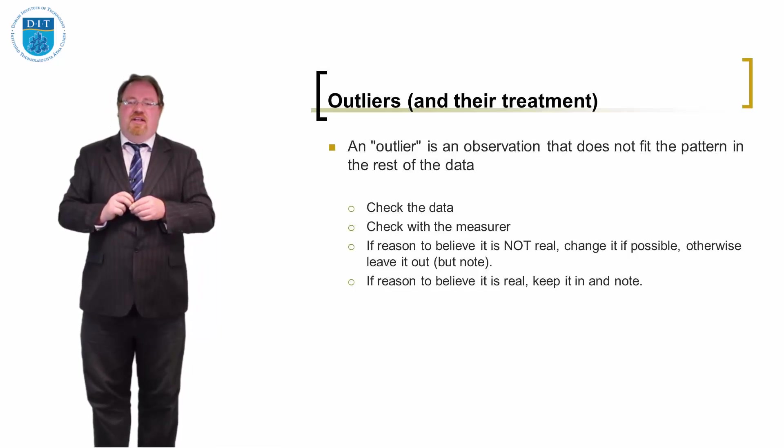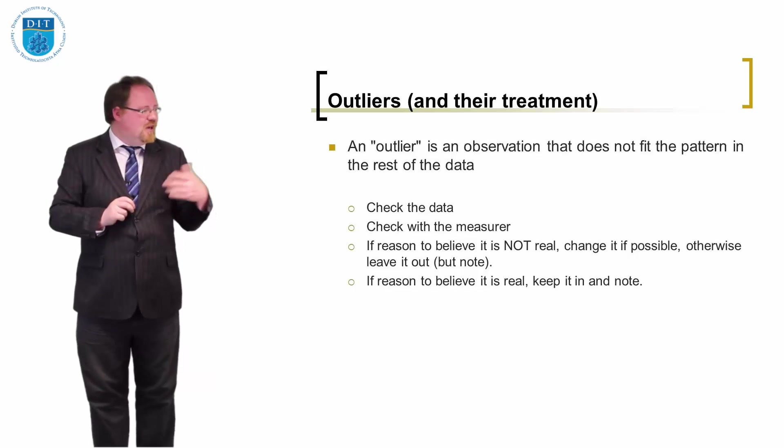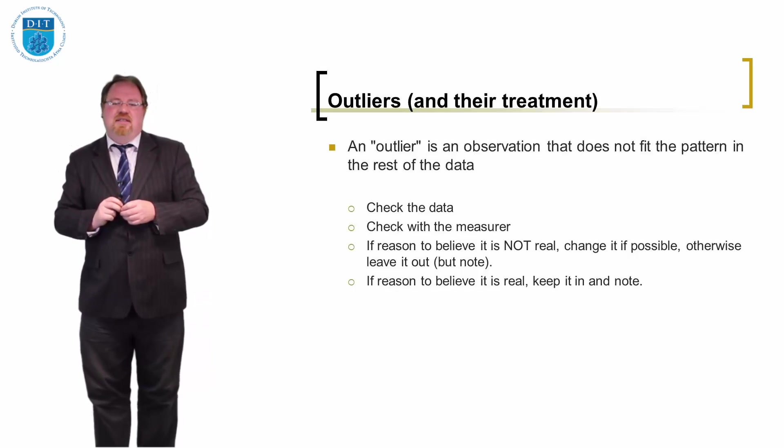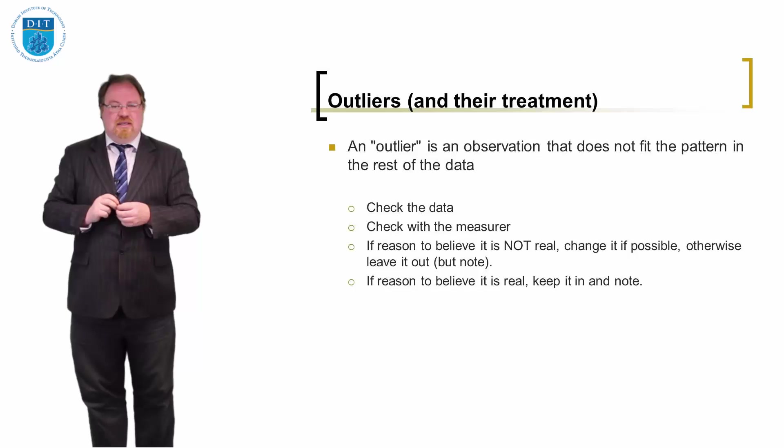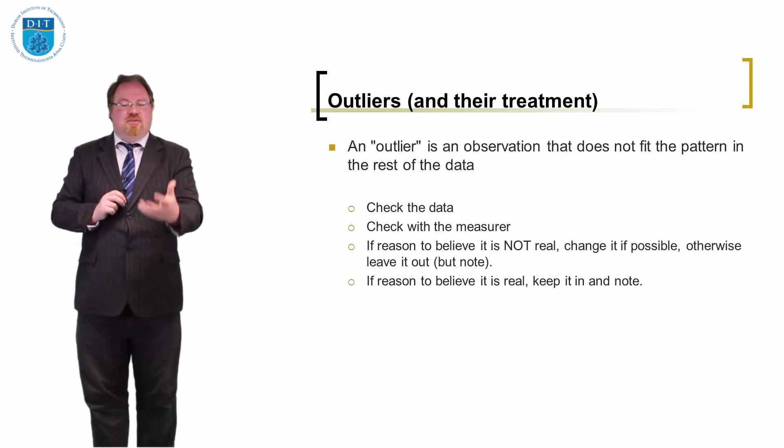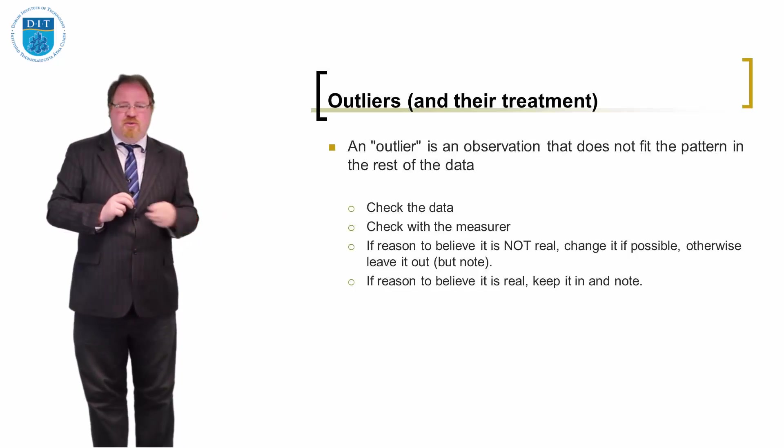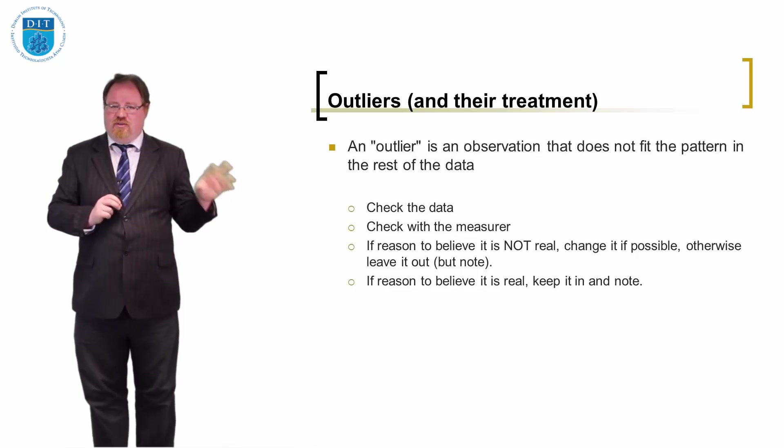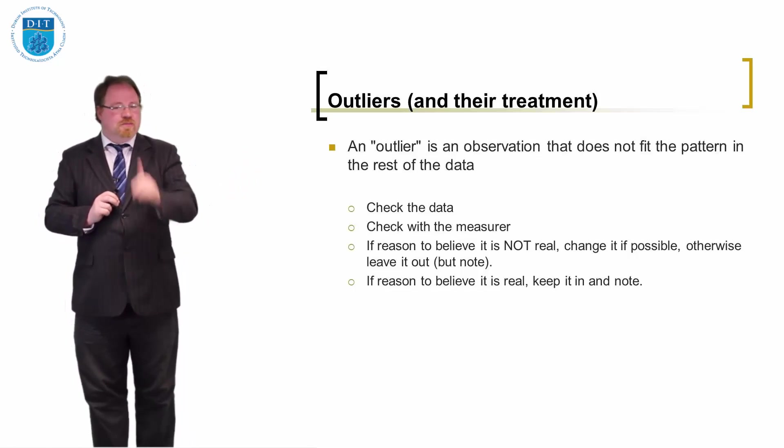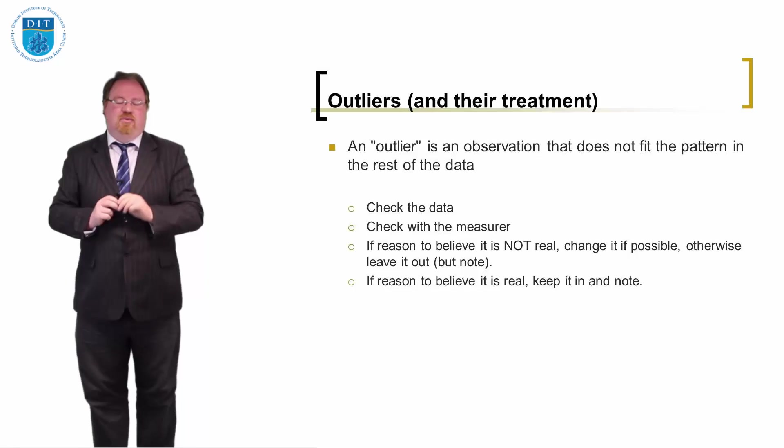Well, really what we should do, first thing first, is check that it is a correct value. Maybe somebody was typing in 50 and they accidentally typed in 500 or 5000 instead. So if that is the case, we need to check with the person who did the measurement. If it was us or somebody else, go back to the original notes and check if that 500 should actually be a 50. If it should be a 50, then we change 500 to 50. But importantly, we note that we made the change.